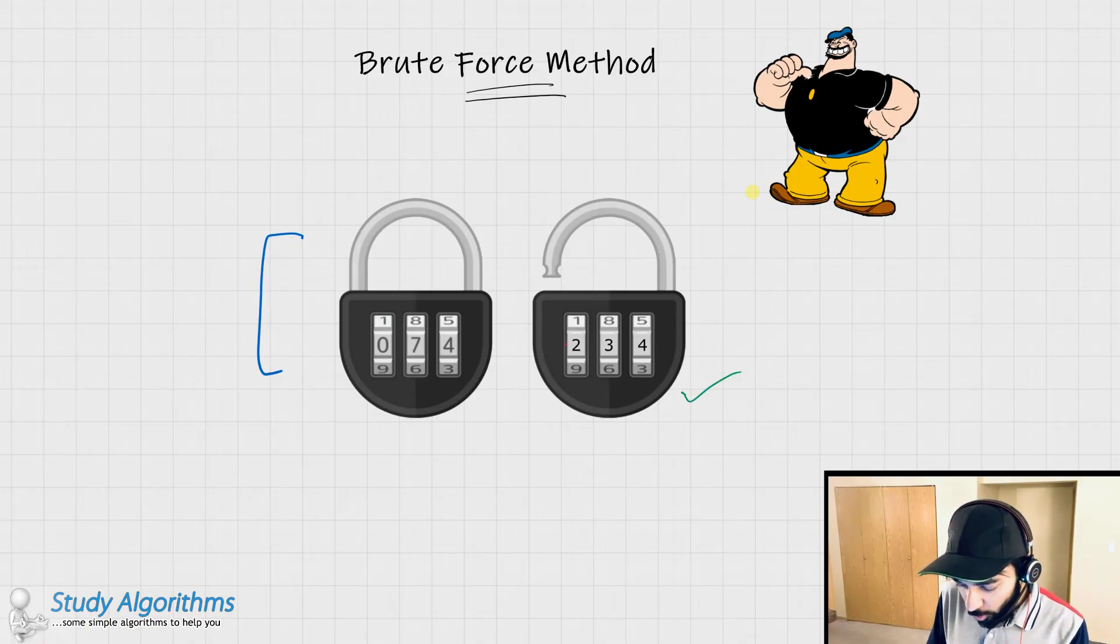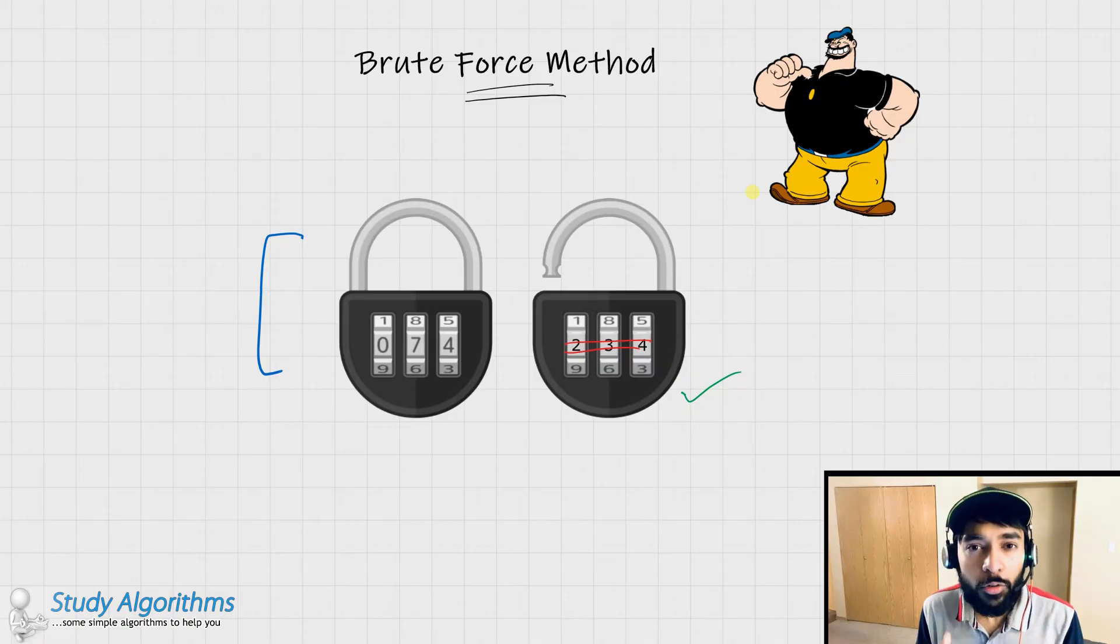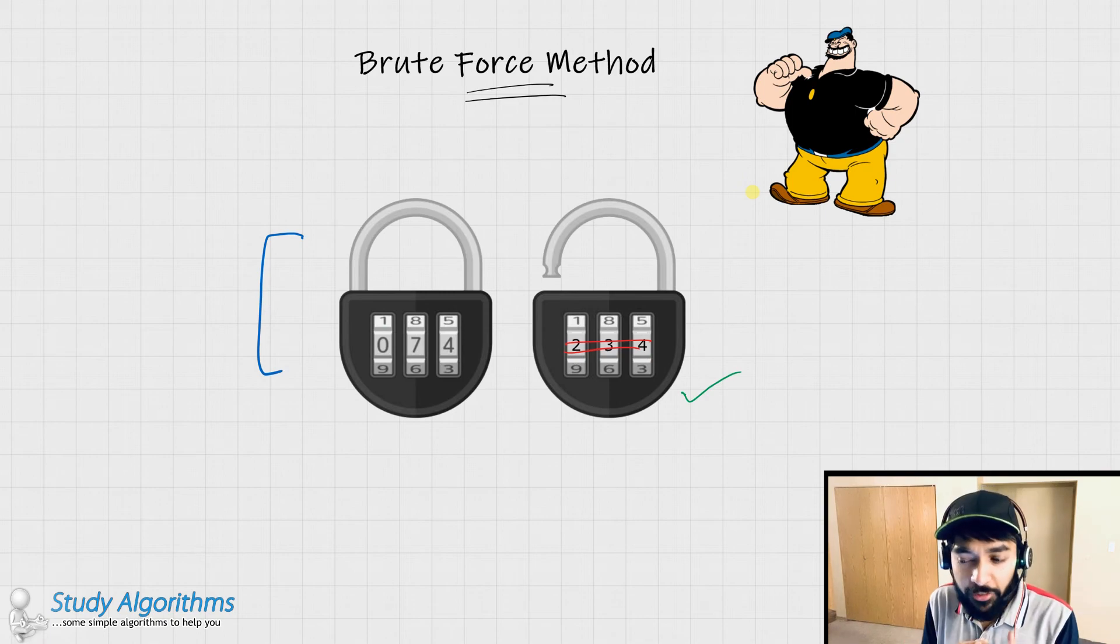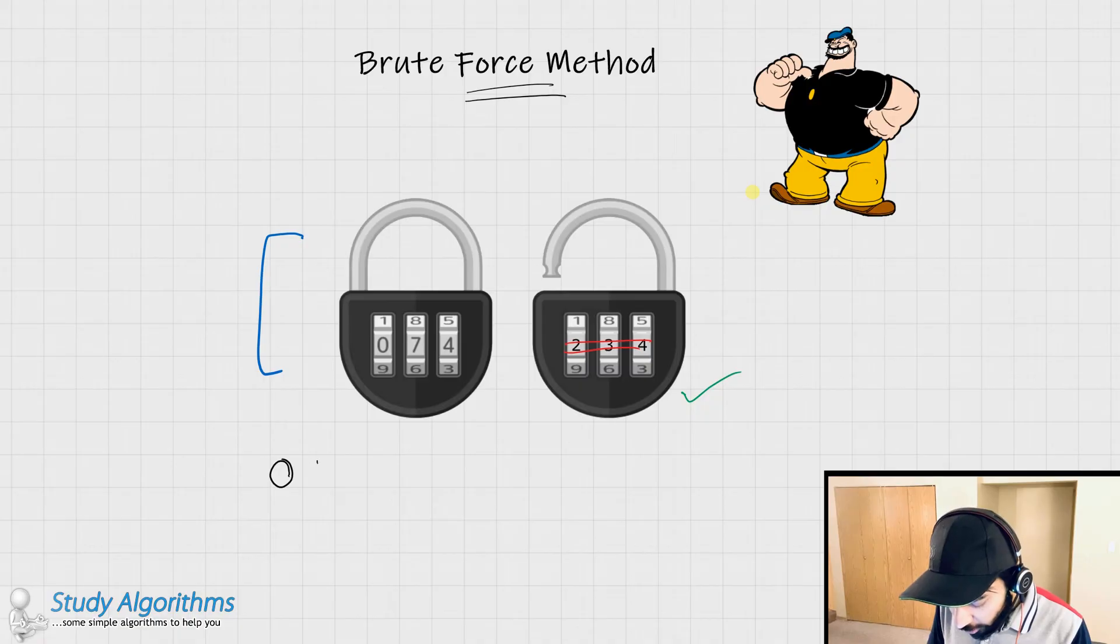But what if you don't know this combination and you still want to open this padlock desperately? What do you do? One thing that would come to your mind is, what if I try all the combinations that are possible? So I would go with 000, then 001, 002, 003, and then so on.